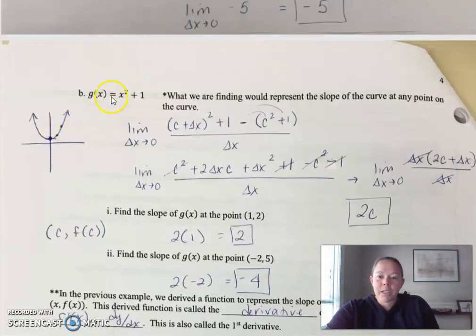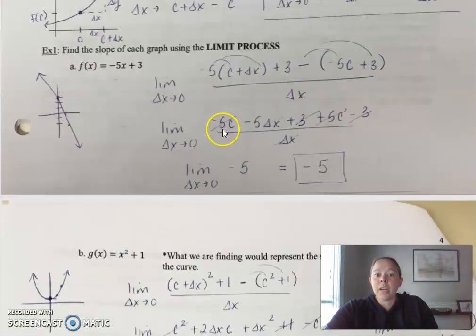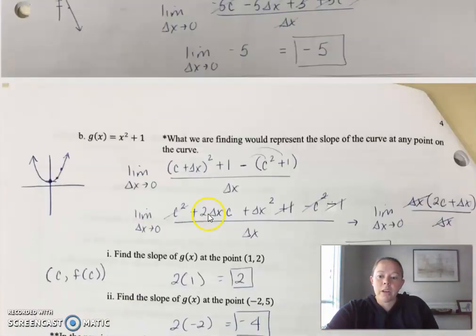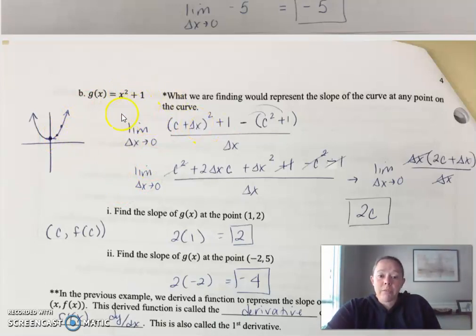It gets a little more complicated when you plug in binomials. Now I want to know the slope of the tangent line — in this case, finding what represents the slope of the curve at any point. Notice they didn't tell us to find the slope at x = 3. With a curved function, the slope of the tangent line at a point over here is going to be much steeper than at the vertex. So if they don't tell us specifically where to find it, we're going to get a formula.